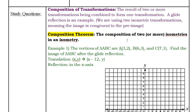We are using two isometric transformations, meaning the image is congruent to the pre-image. All that means is we are preserving the shape and size — it doesn't change, it just slides, rotates, or reflects around the graph.